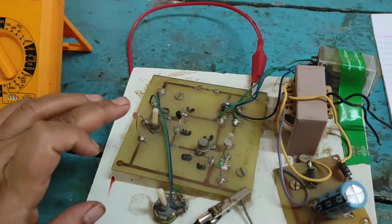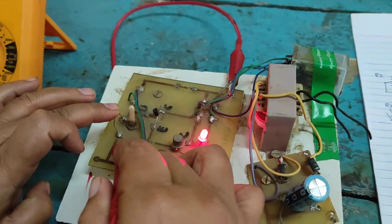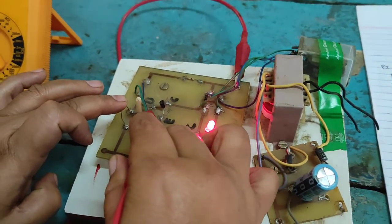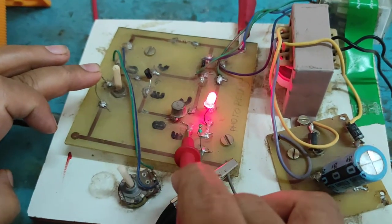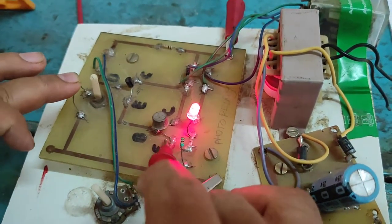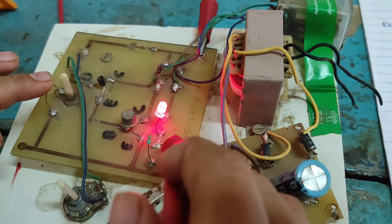LDR in dark condition. That time voltage across LDR is high. T1 is biased. Then T1 is on. That time T2 also on. The current through relay coil. Then relay is on and LED also on.